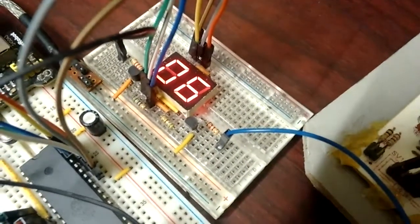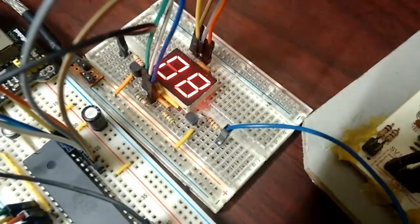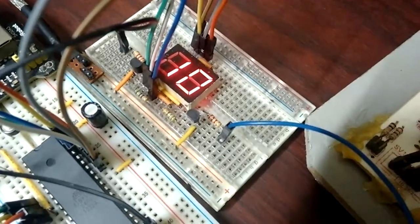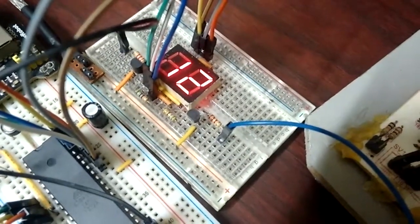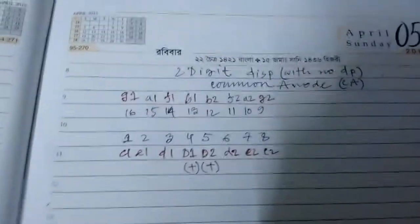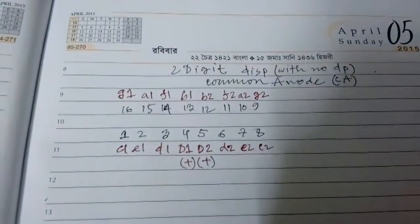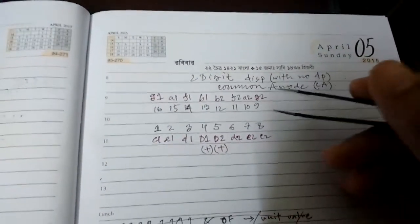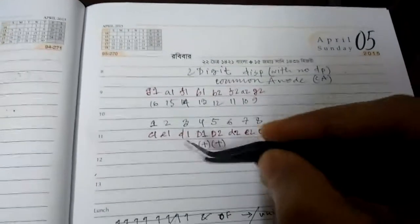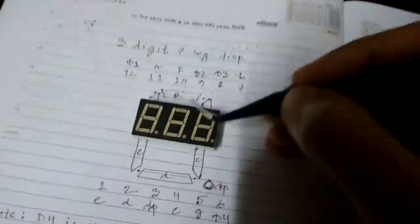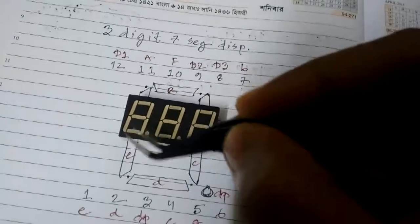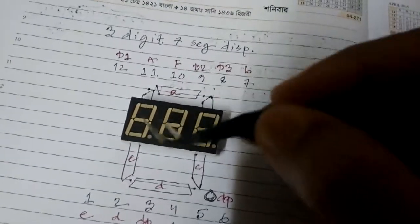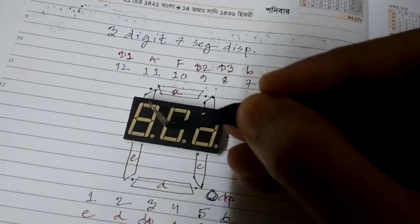So we need common anode type of display, but I'm going to use this with a 4511. So this time I used this seven segment display - it's a two-digit seven segment display. I couldn't find any pinout for this online, so I just mapped out the pinning.